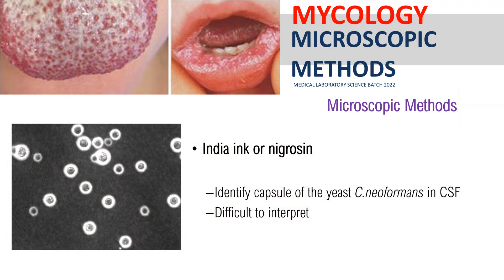The next method is negative staining, and one of the best examples is India ink or nigrosine. In preparing your India ink, you prepare 10% KOH and then add India ink — that preparation is called India ink stain. If you add nigrosine to your 10% KOH instead, that is called nigrosine stain.